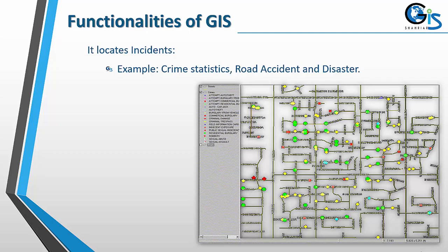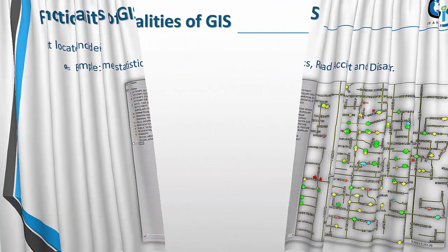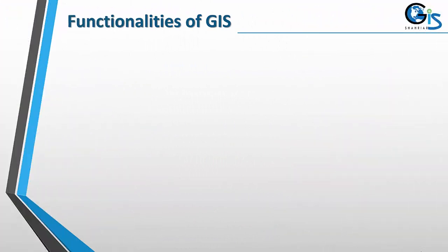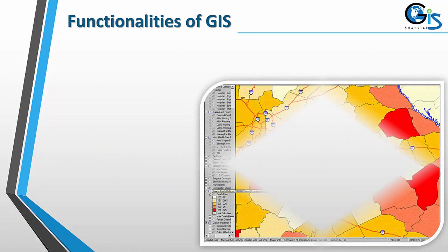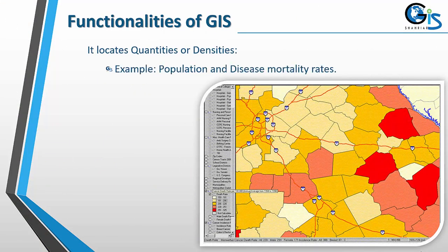GIS also locates incidents — for example, crime statistics, road accidents, and disasters. It locates quantities or densities — for example, population and disease mortality rates.